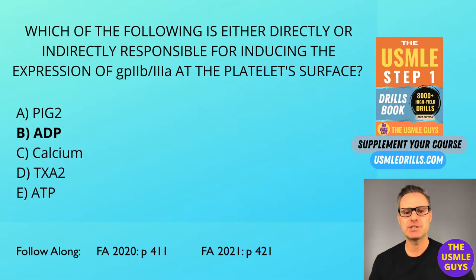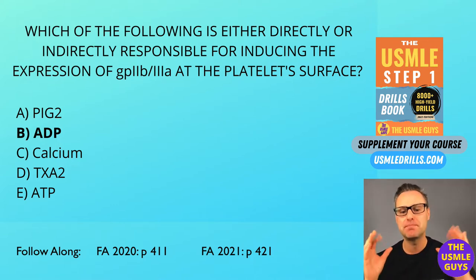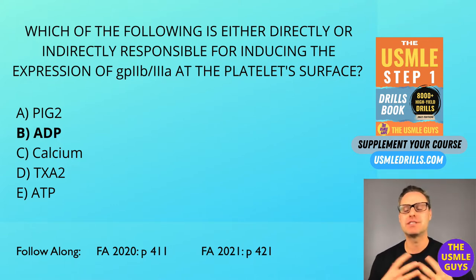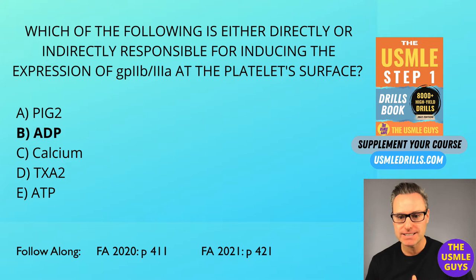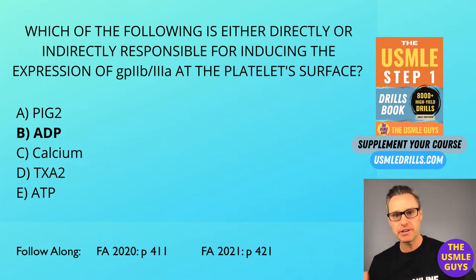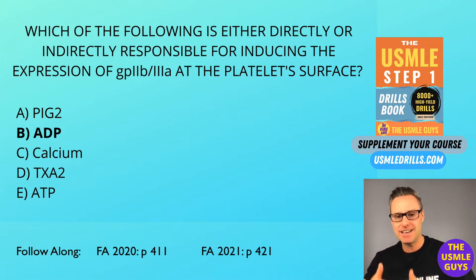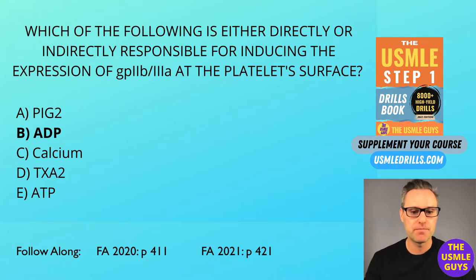The correct answer here is B, ADP. Let's talk about the formation of a platelet plug, which is the sequence of events leading us from the point of endothelial injury where we're bleeding, to the point where the bleeding stops and then the coagulation cascade can start.